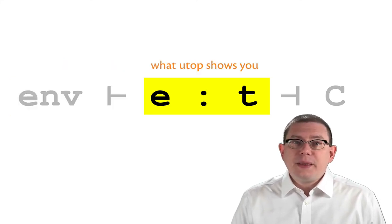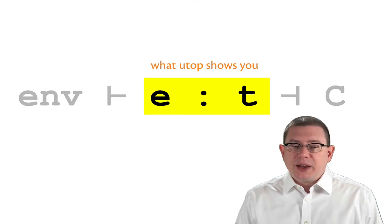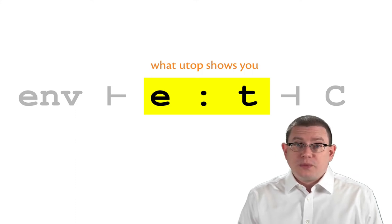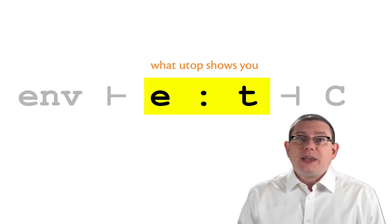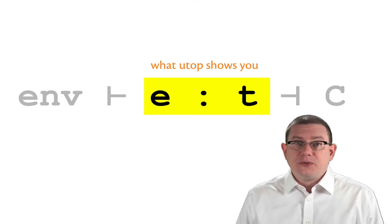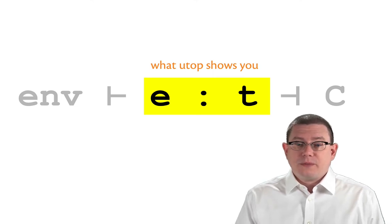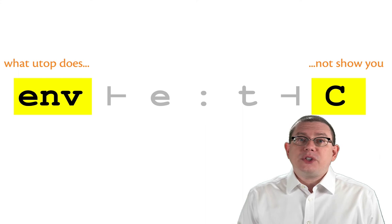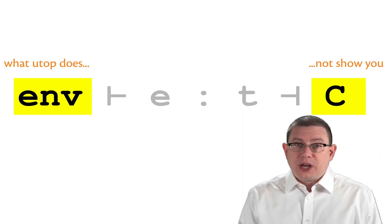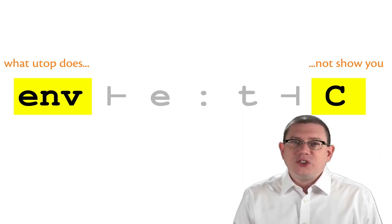Of course, the piece in the middle between the two turnstiles is what UTOP shows you. You enter an expression, it comes back with the type that was inferred for that expression. The pieces on either side, though, outside the turnstiles, that's what UTOP doesn't show you.